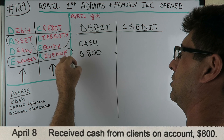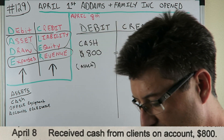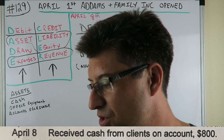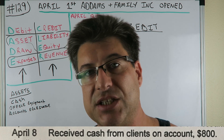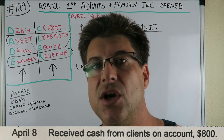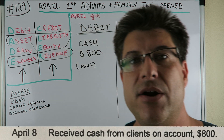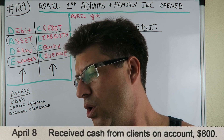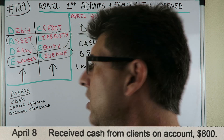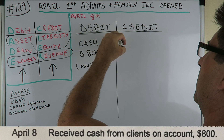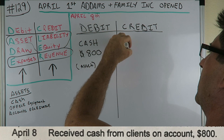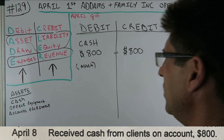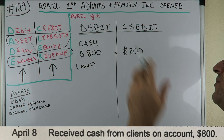We're not going to worry about what 'on account' means just yet — we just received cash, $800. Our cash is increasing, cash is an asset, so we debit $800. That's half the journal entry. Now I'll put $800 on the credit side too because I know the amounts have to equal. We've got our debit correct and $800 in our credit — we just need the account name.